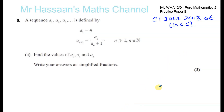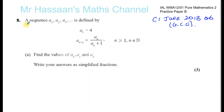Here we have question 8 from my practice paper B, which is taken from C1 of June 2018, question number 6, the GCE paper. This is a recurrence relationship — before, this used to be a topic in the old C1, now it's in the P2. This is one of the reasons why I compiled this paper from different parts to make it relevant to the P2 exam for the international A level paper.